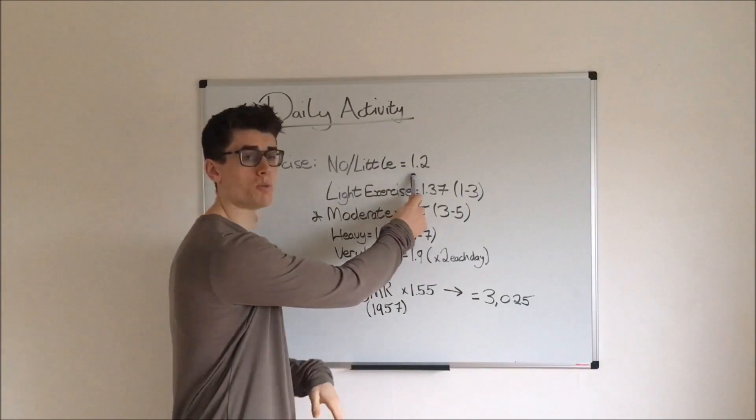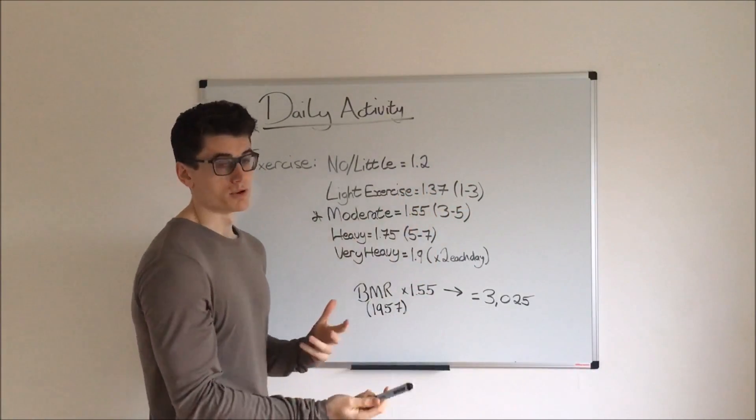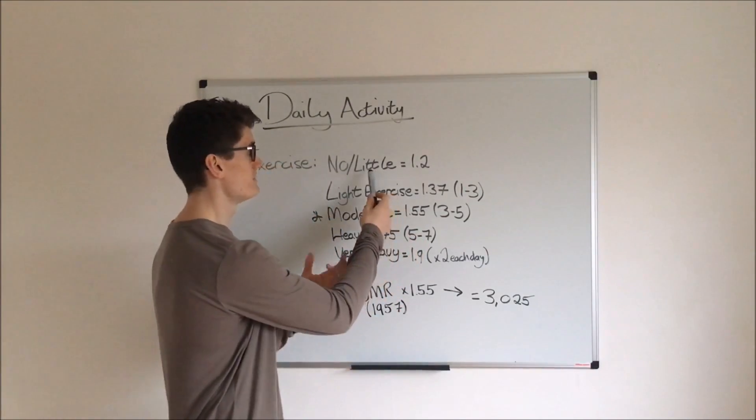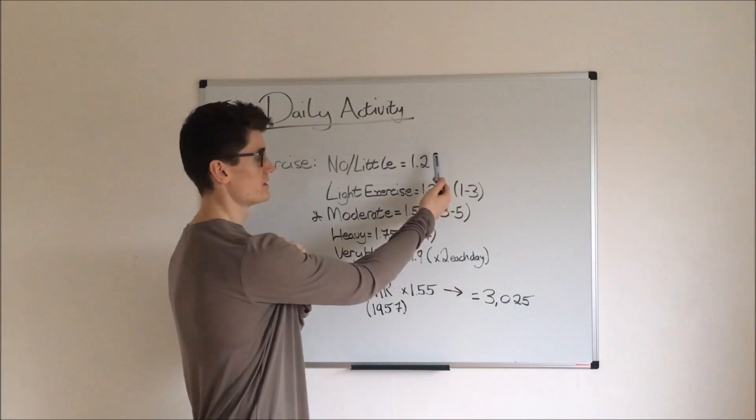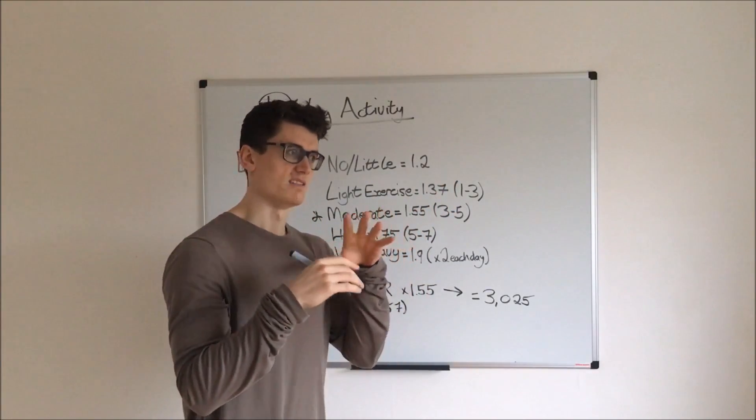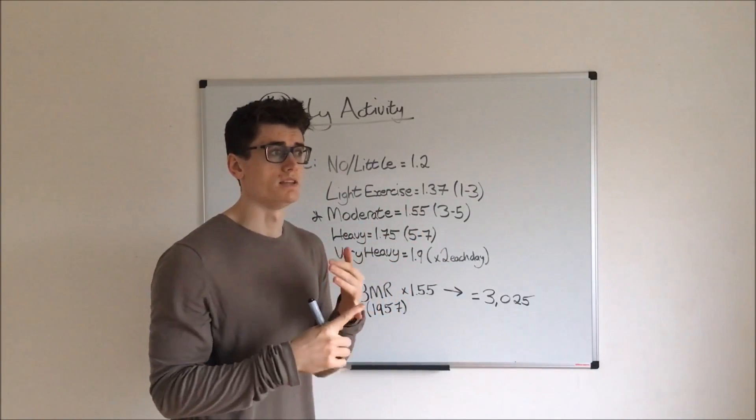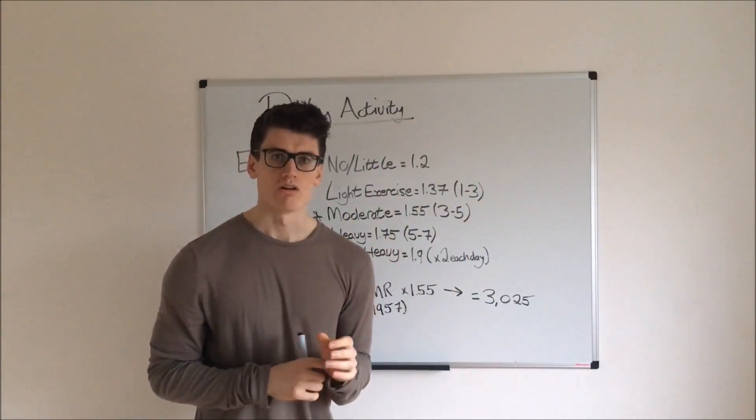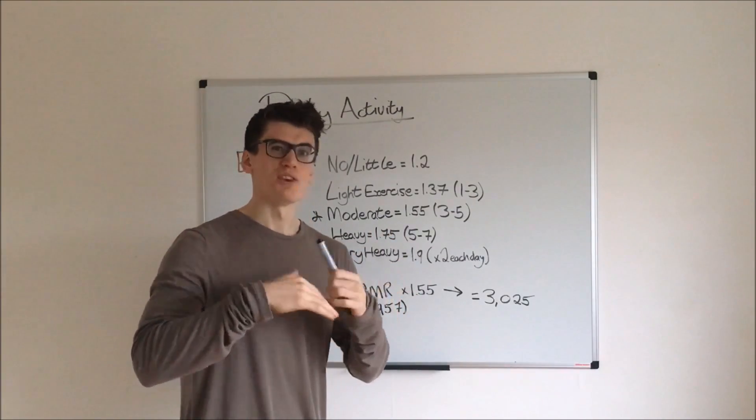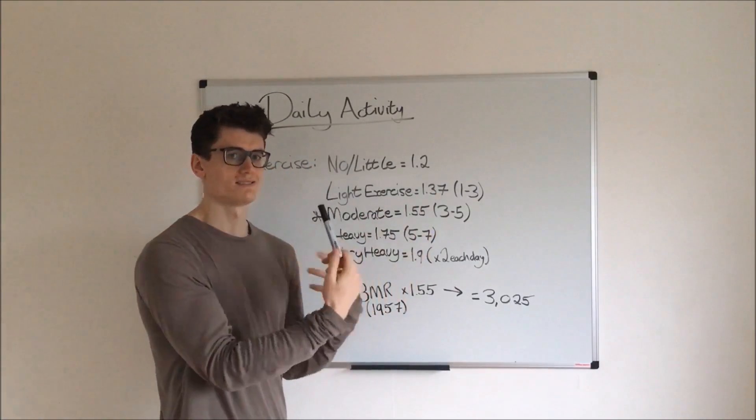In terms of light exercise, this refers to somebody who again has a very similar lifestyle to that of someone who's very sedentary, but they do participate in irregular bouts of exercise. So it could mean going to walk the dog, it could mean going for a run maybe once or twice a week, but again no more than that. And so then you would times that by 1.37.